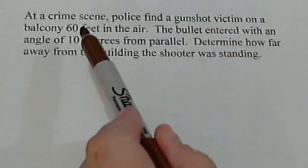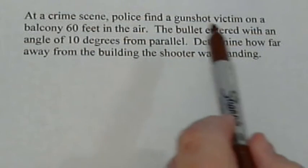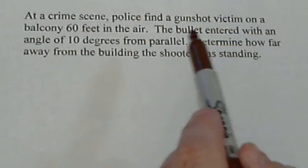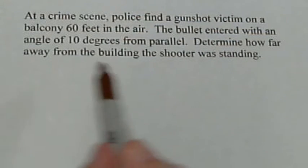Here's a crime scene involving bullet trajectory. Police find a gunshot victim on a balcony that's 60 feet high. The bullet entered with an angle 10 degrees from the parallel.